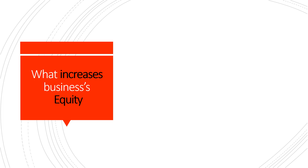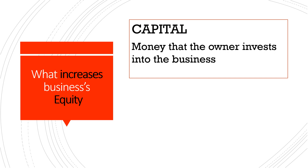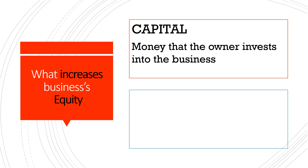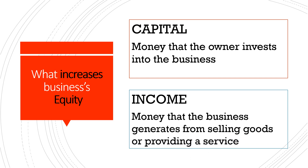So what increases the business's equity? Let us see how we calculate how wealthy a business is. Firstly, the owner has to put money into the business — we call this investment capital. The business operates because it wants to sell something, either a service or some goods. The money that the business generates from selling goods or providing a service is called income. So a business increases its equity by having capital and income.